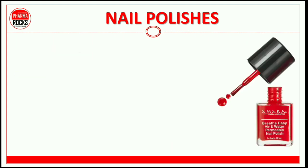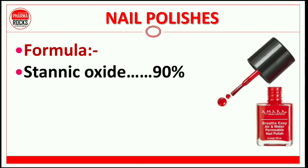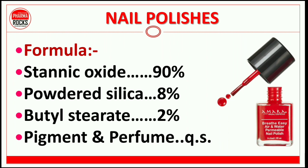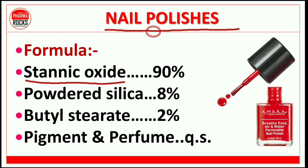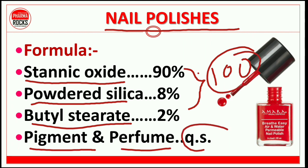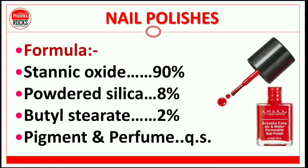Next are the ingredients. The common formula for nail polish uses stannic oxide, powdered silica, butyl stearate, and pigment and perfume. This is the composition of nail polish. In multiple choice questions, if asked which is the key ingredient for nail polish, the answer is stannic oxide as the main key ingredient, then powdered silica as the second ingredient, and butyl stearate as the third. The composition is 98 to 100%, and pigment and perfume are added in a quantity sufficient (QS) amount.